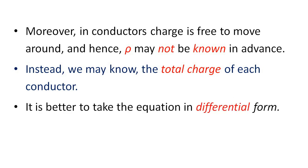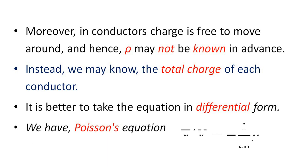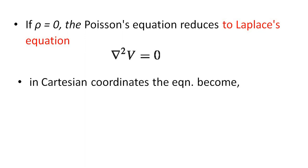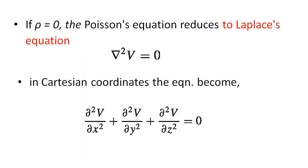It is better to take the equation in differential form. We have the Poisson equation: ∇²V = −(1/ε₀)ρ. If ρ = 0, the Poisson equation reduces to the Laplace equation: ∇²V = 0. In Cartesian coordinates, the equation becomes ∂²V/∂x² + ∂²V/∂y² + ∂²V/∂z² = 0.